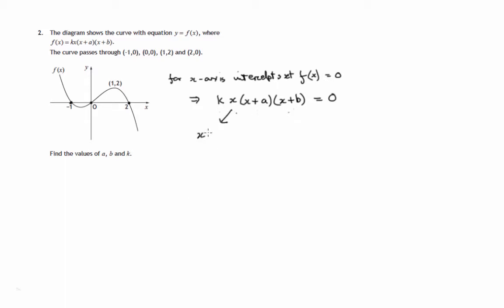Either x equals 0, in which case we get this intercept, or x plus a equals 0, in which case x is negative a. That would be one of the other two intercepts. Or x plus b equals 0, x equals negative b.